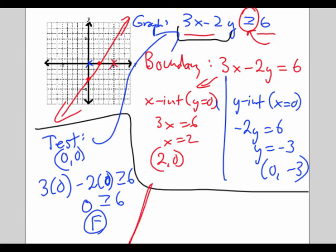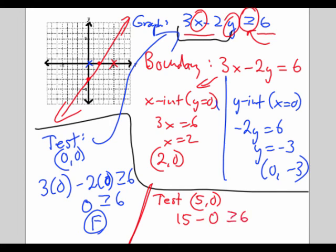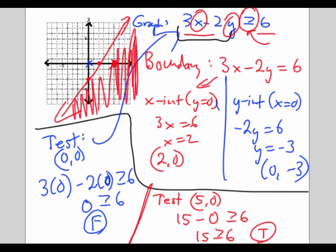Let's take 5 comma 0 and verify it satisfies the inequality. If x is 5, that's 15 minus 2 times 0, which is 0. Is 15 greater than or equal to 6? Yes, that is true. So this point satisfies the inequality, which means any other point on this side of the boundary — below the line — will also satisfy it. So I shade below the line.